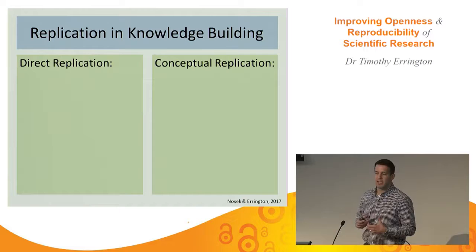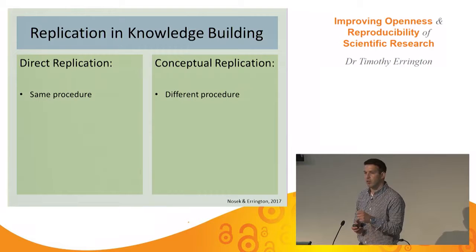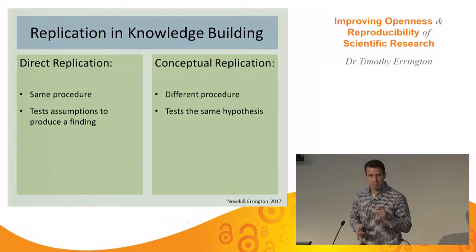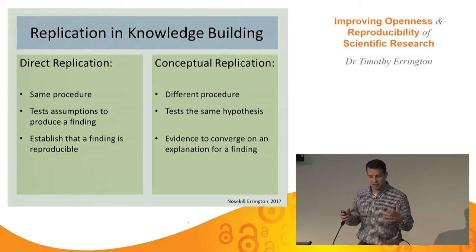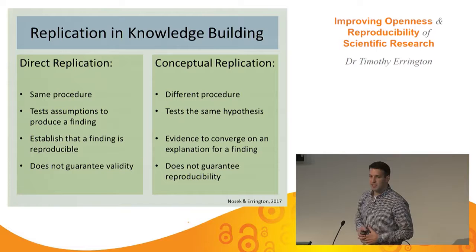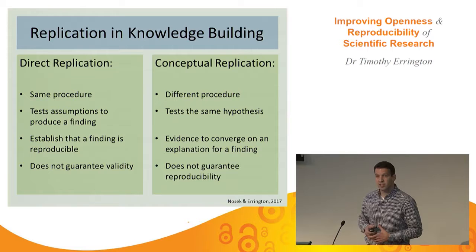There are two different flavors of replication: direct replication and conceptual replication. In direct replication we're doing the exact same procedure; in conceptual replication we're on purpose using a different procedure — testing whether it can generalize beyond that specific procedure. In a direct replication I'm testing the assumptions and conditions necessary to produce that finding; in a conceptual one I'm testing the general hypothesis and looking for additional converging evidence. Critically, a direct replication doesn't guarantee validity — the same confounding variable could appear in multiple studies.